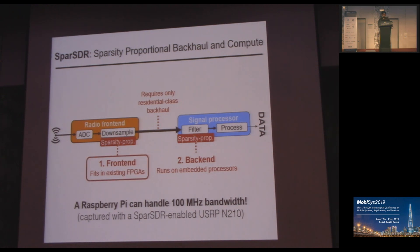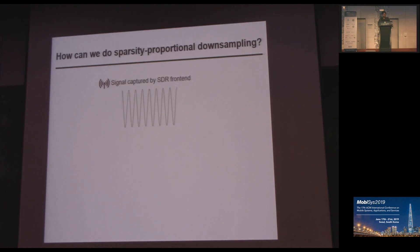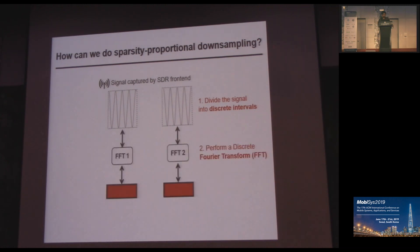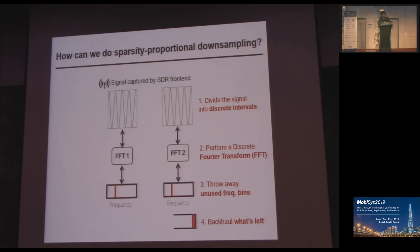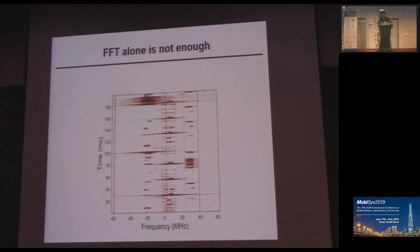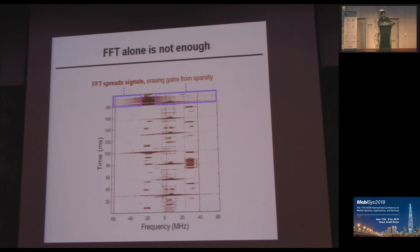Let's first take a look at the front-end. The obvious thing to do is to represent the signal captured by the software-defined radio in the frequency domain. We divide the signal into different intervals and apply a Fourier transform. In the Fourier-transformed bins, we choose the bins which are active or high-power, throw away the unused frequency bins, and backhaul only those bins. However, when we do this on a raw capture, we see that the signal is leaking into adjacent frequency bins. This is because applying FFT on a limited time interval causes leakage in frequency, which erases the gains we get from sparsity of signal transmissions in the spectrum.